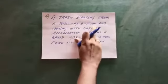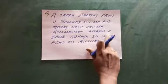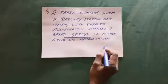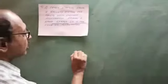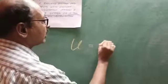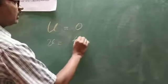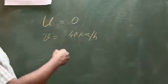A train starting from a railway station and moving with uniform acceleration attains a speed of 40 kilometers per hour in 10 minutes. The time and final velocity are given. Initial velocity is 0. Final velocity is 40 kilometers per hour. Let's convert this into meters per second.